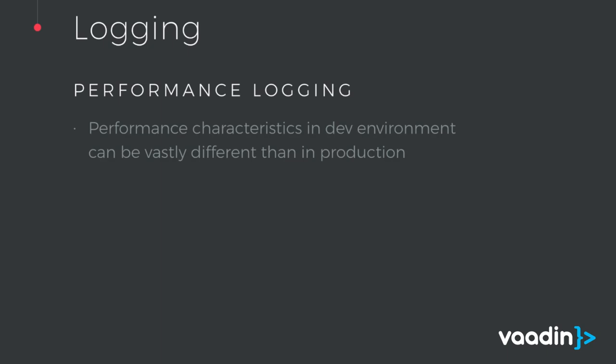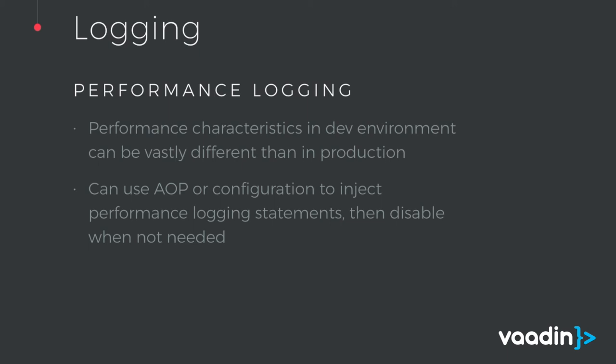A few words about performance logging. This is something you might want if you have a slowdown in production. You usually don't get the same information in a development environment as in production, because the data is probably not the same. If you are using something like Spring, you can use AOP or some configuration to add performance logging. If you have a known chain of events causing a slowdown, you can turn on performance logging for a short while — since it is itself expensive — and then disable it when done. Then you can take the logs and see what was actually happening and try to re-implement it so it's not so slow.